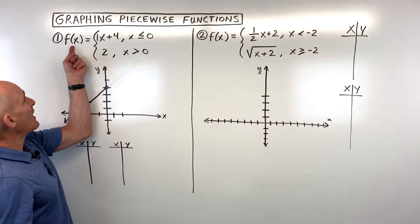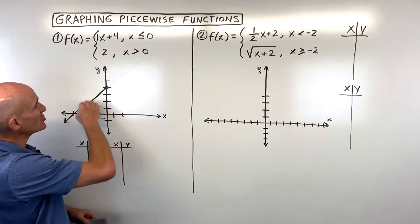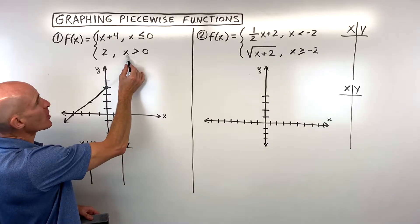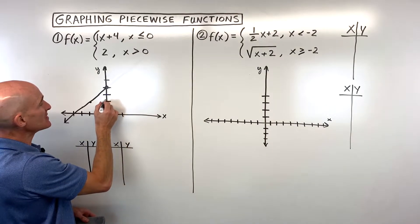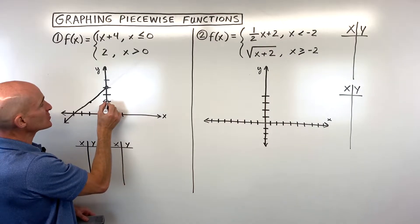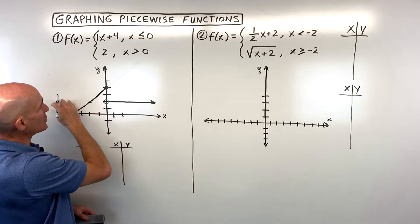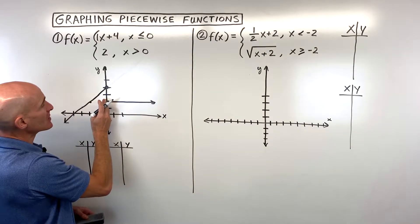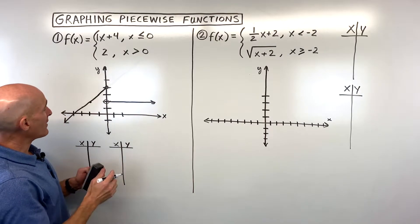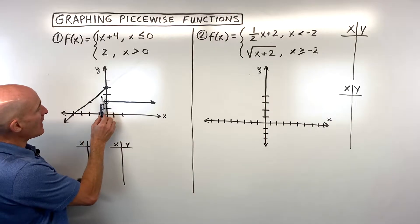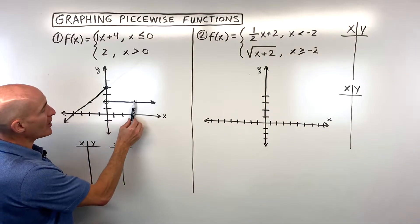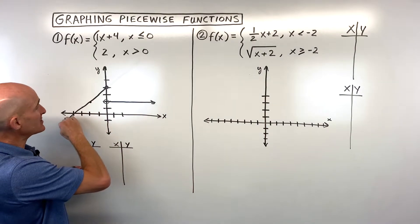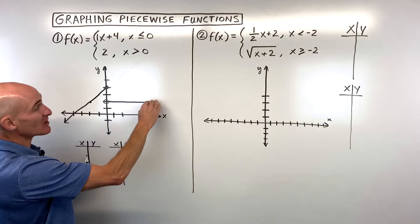Now the second equation: f of x equals 2. We know y equals 2 is a horizontal line. But we only want the part where x is greater than 0 — not at 0, just to the right. So that's an open circle at 0. It's a piecewise function because it passes the vertical line test — for every x value there's only one y value. You're on the first graph until x equals 0, then you jump down to the horizontal line.